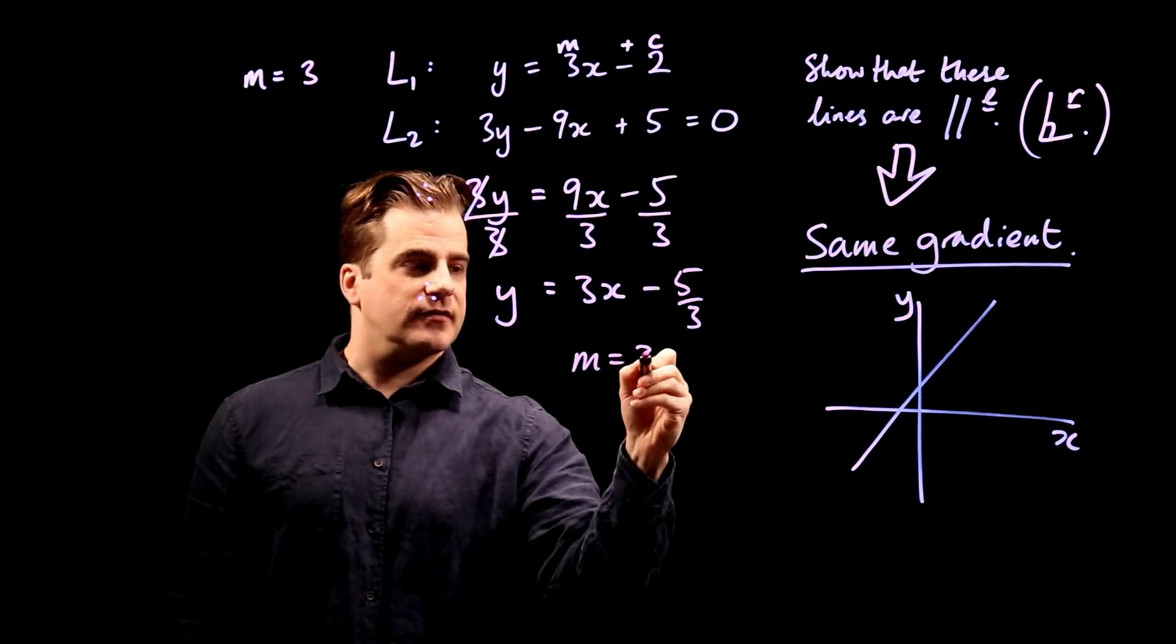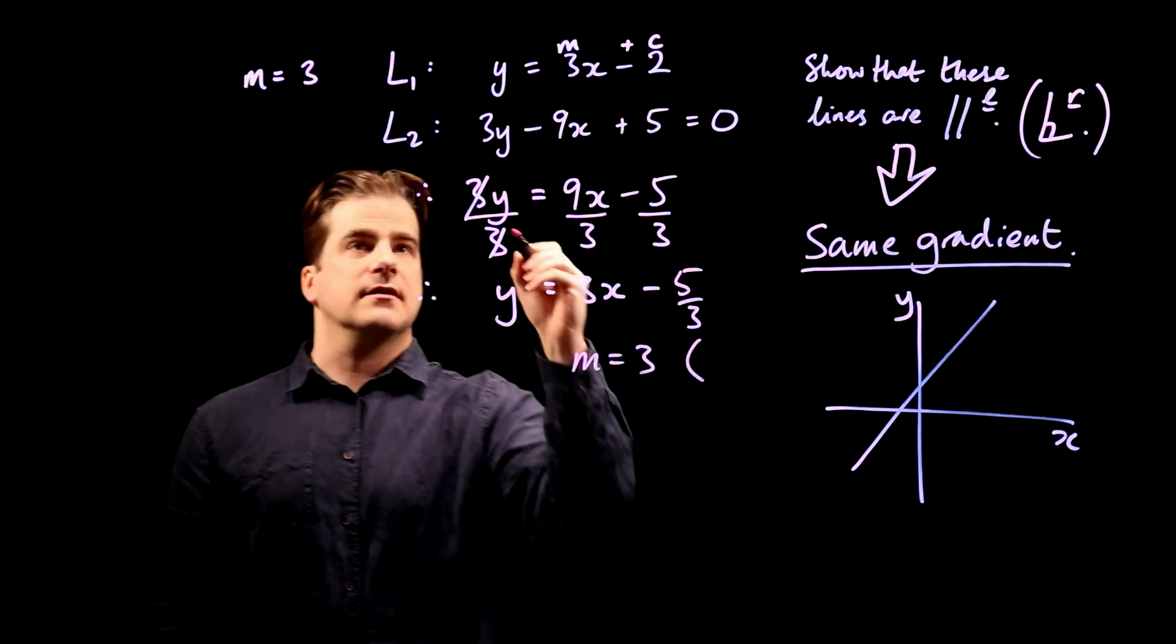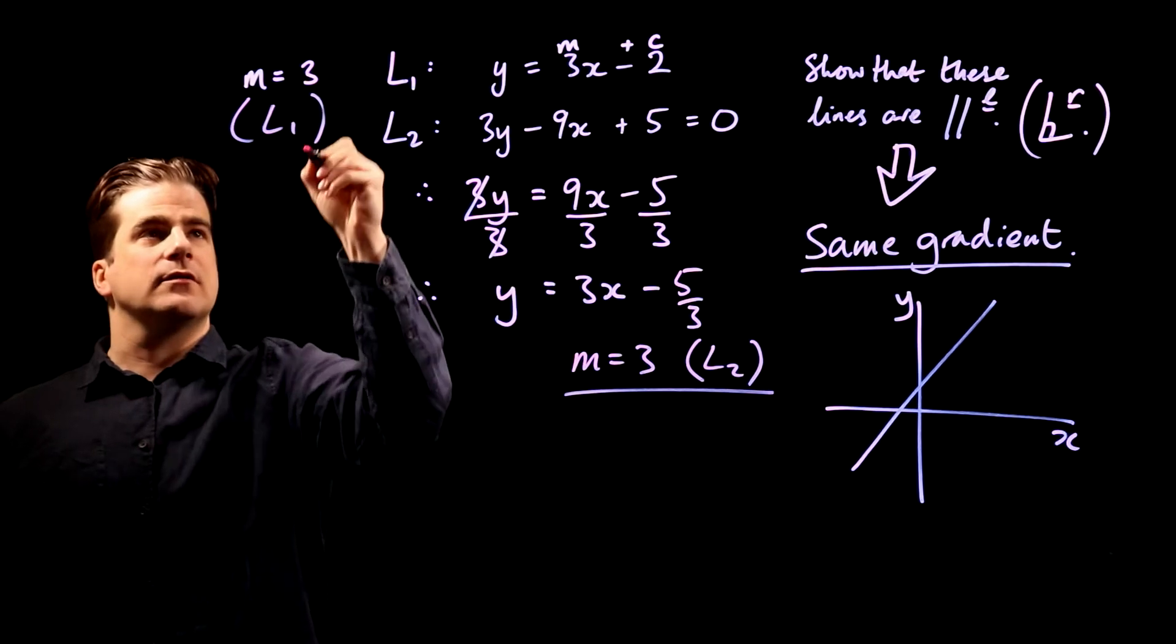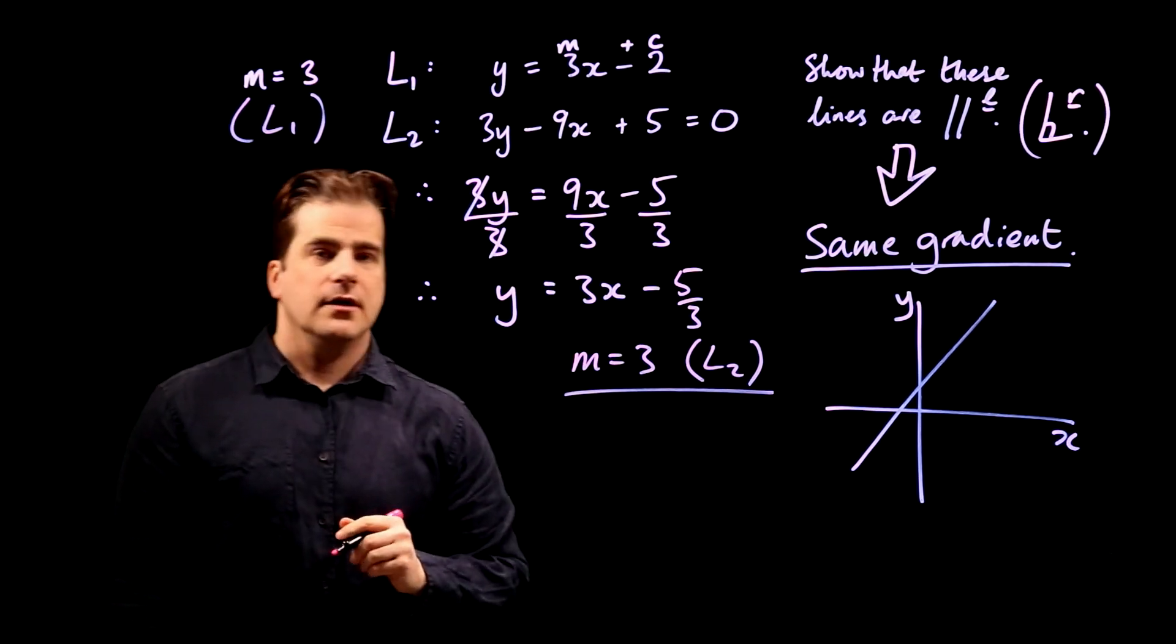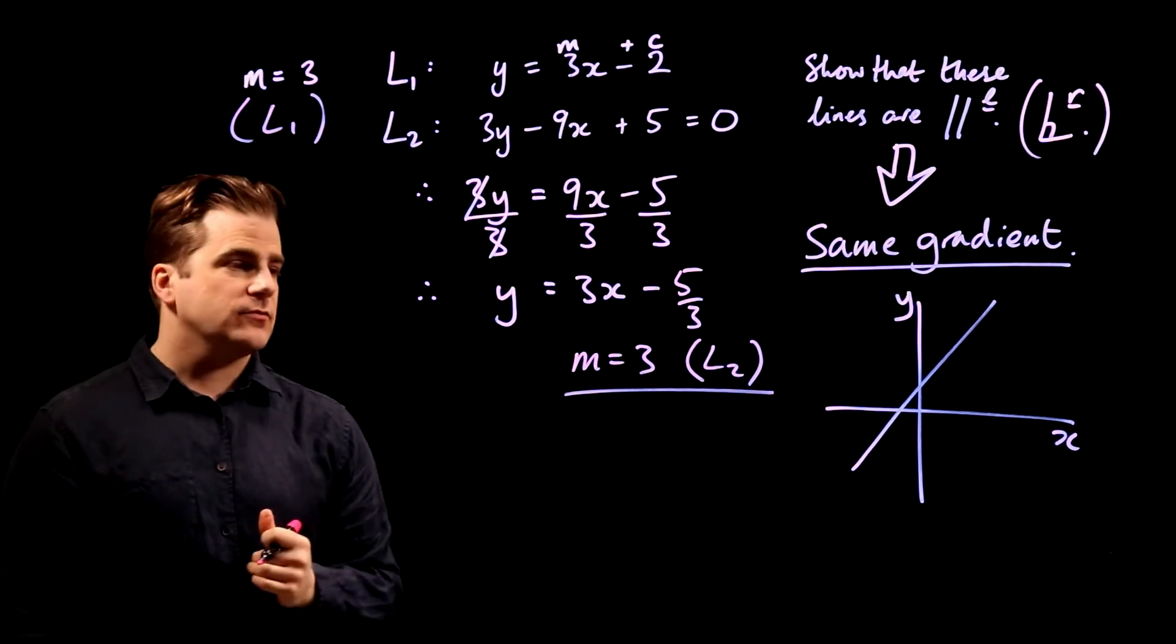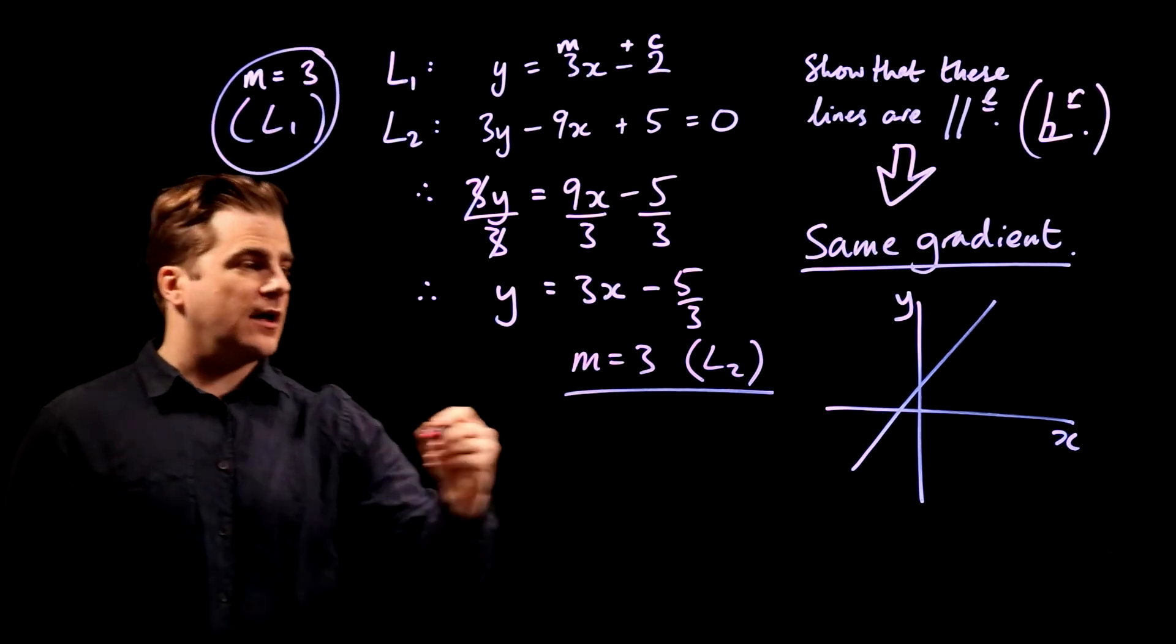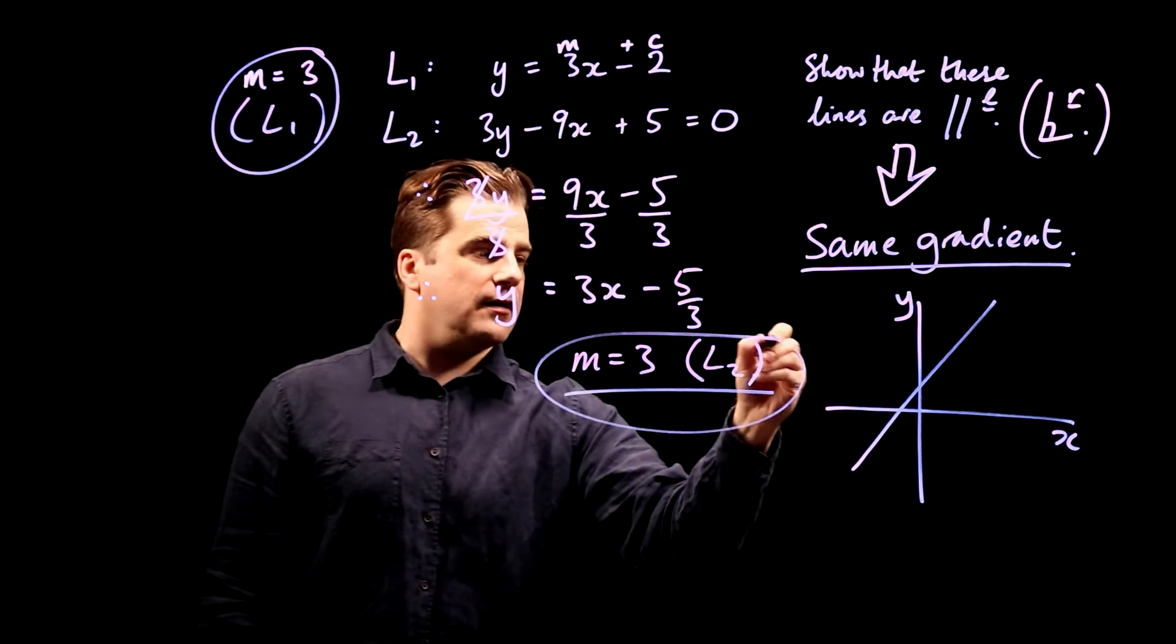So m is 3 for line L2, and m is 3 for line L1. So we've done it. We've proven that these two lines are parallel.